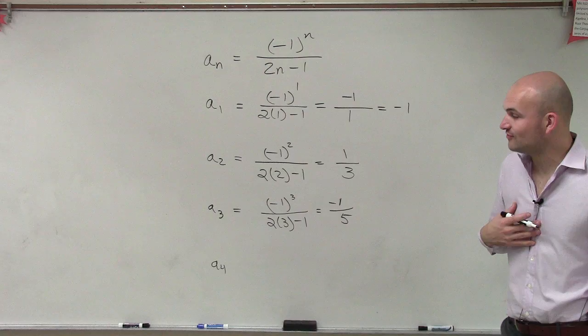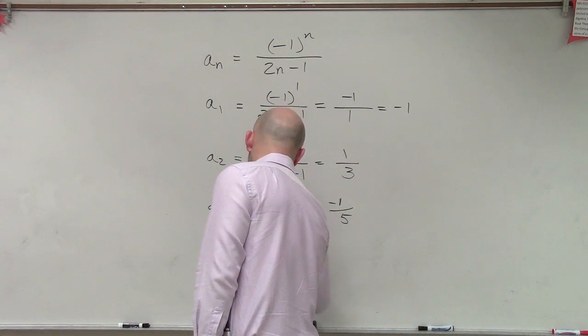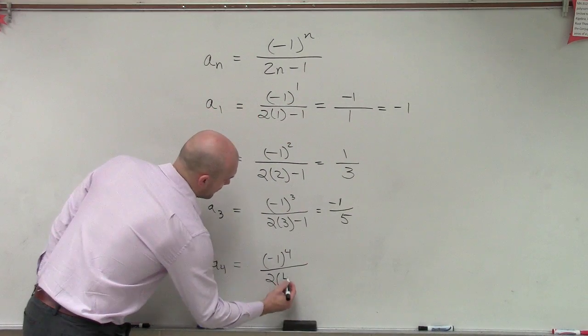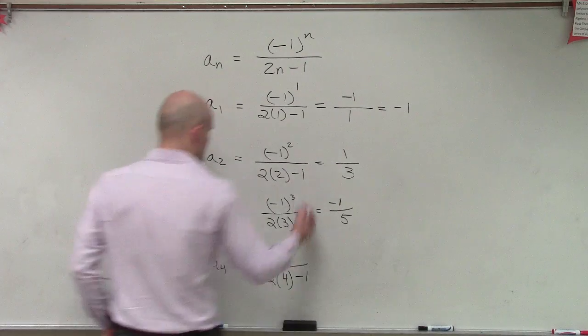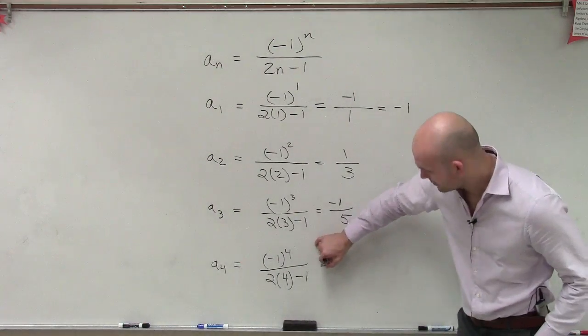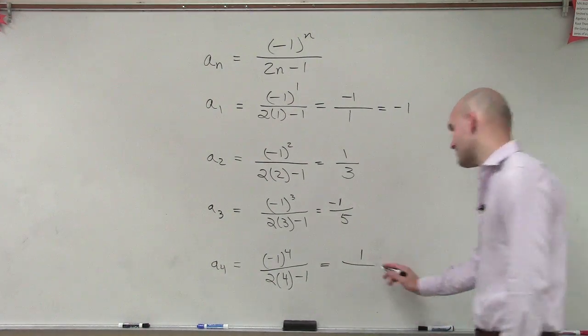So now we have a sub 4. So again, we're just going to do the same thing. So we have negative 1 to the fourth power divided by 2 times 4 minus 1. Negative 1 raised to the fourth power, we know is going to be a positive 1. And then 2 times 4 is 8 minus 1 is 7.